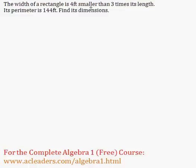The width of a rectangle is 4 feet smaller than 3 times its length. The perimeter is 144 feet. Find its dimensions.